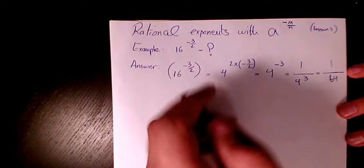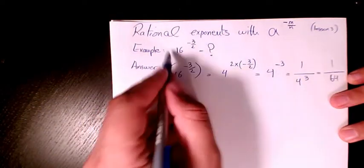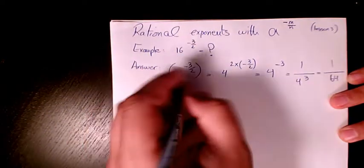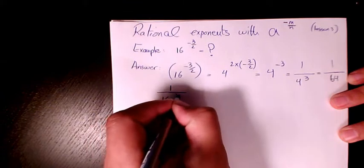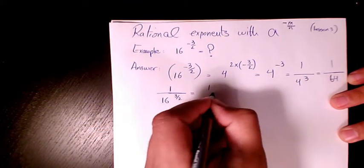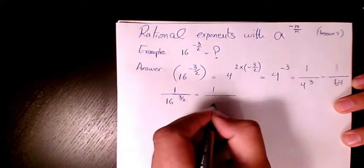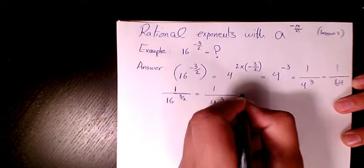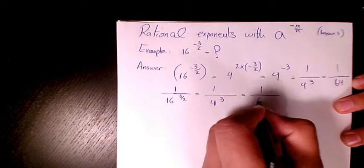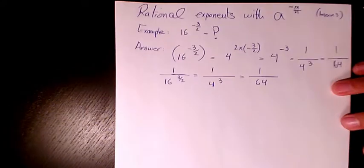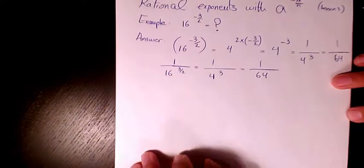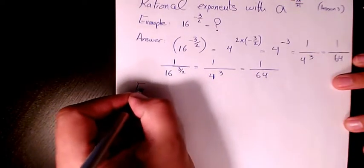There is another option. Right from the beginning you can take the inverse, so it becomes 1 over 16 to the power of 3 over 2, which gives 1 over 4 to the power of 3, which is 1 over 64. Both methods are completely correct. Next example.